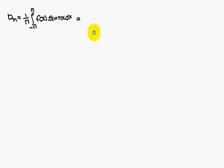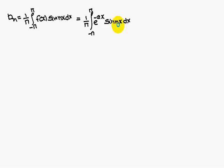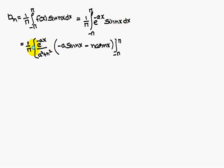Similarly, you can find out the bn value. bn is equal to 1 by pi integral minus pi to pi f of x sin nx dx. f of x is e power minus ax, sin nx dx. Integrating: 1 by pi into e power minus ax by a square plus n square, into minus a sin nx minus n cos nx, between the limits minus pi to pi.